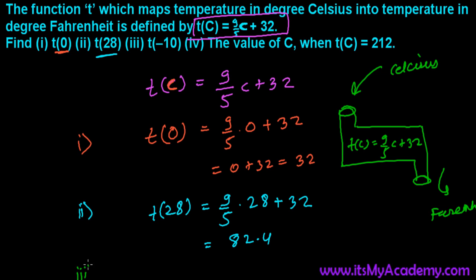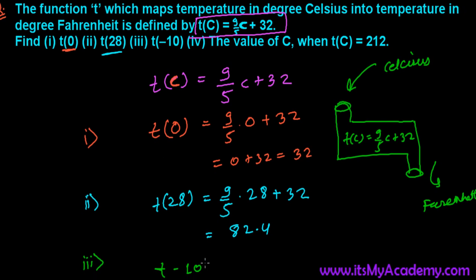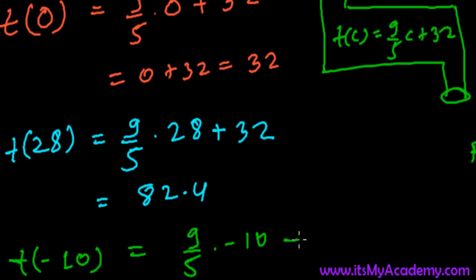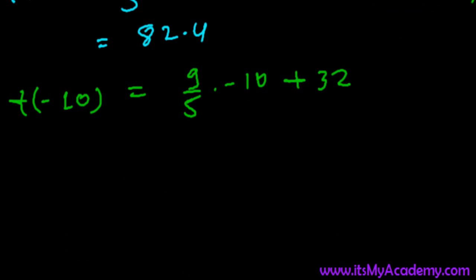And the third one is t of minus 10. 9 over 5 times minus 10 plus 32. Oh my God, that's so much less temperature. Maybe European, northern European people feel very easy, even like in Canada or any other country. So 5 times 2, 9 times 2 that is minus 18 plus 32 and we're getting 14. So minus 10 degrees Celsius is equals to 14 degree Fahrenheit.